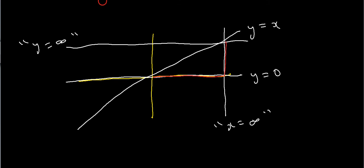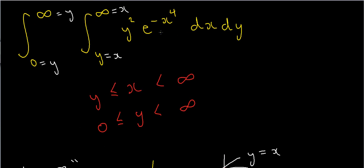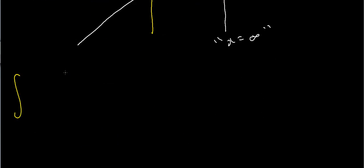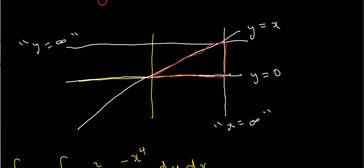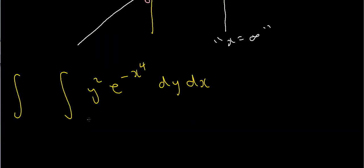Drawing the outline, this is the region of integration. Looking back at the original integral, it has limits in dx dy order. I want to change them to dy dx order. Writing the new integral, I don't yet know the new upper and lower limits. My function is y squared e to the minus x to the power 4, and I want it in dy dx order. Integrating with respect to y first, on this region I've got to start from 0.